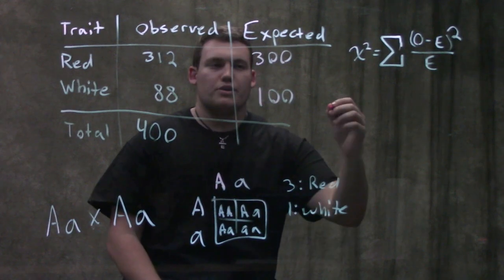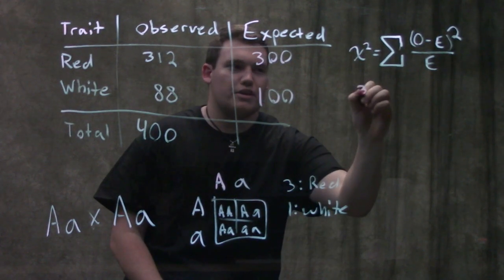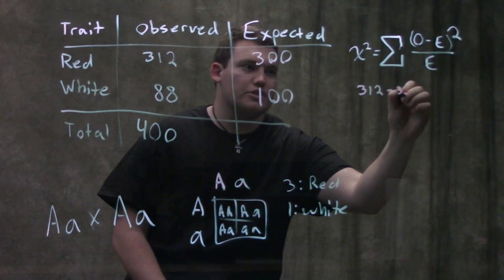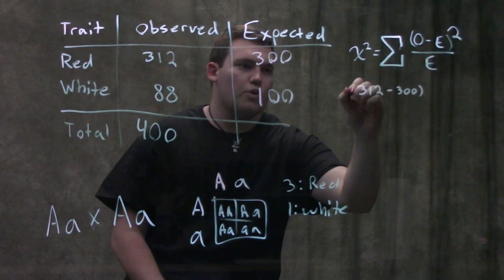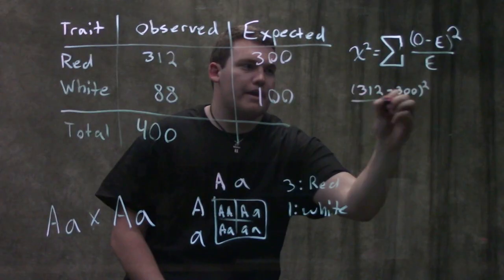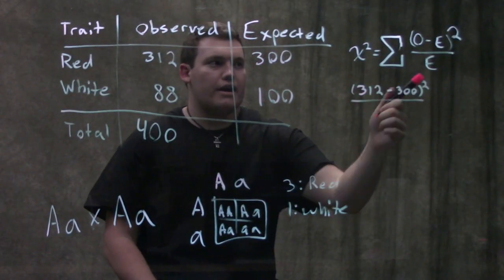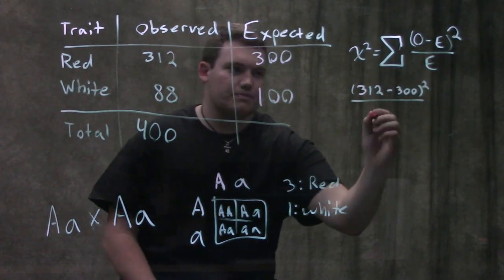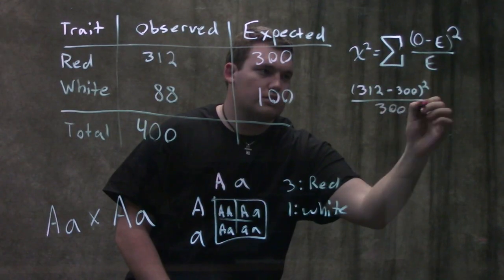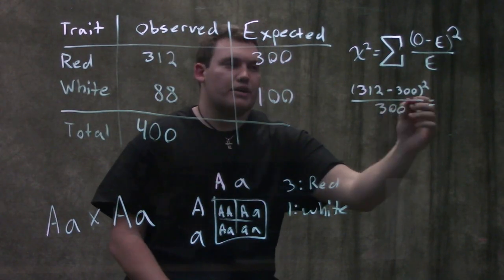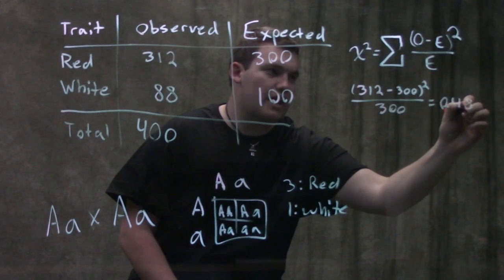So the first thing we're gonna do is we're gonna take our observed 312 minus 300. We're gonna divide by our expected 300. So when we do that we're gonna get 0.48 for this guy.